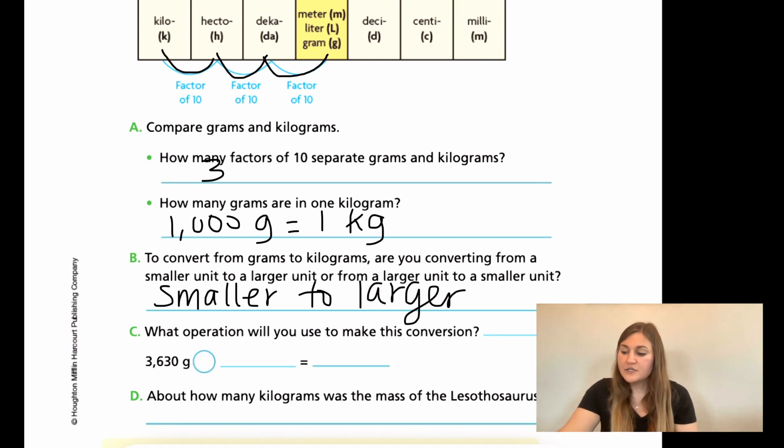Now, what operation will you use to make this conversion? So think about if you look up in the second bullet point under A, it says there's 1,000 grams to every one kilogram. So if we have a bunch of small units and we need just one big unit, we need to go from 1,000 to one. We're going smaller. The number is getting smaller. And the way that we do that is we're going to be dividing.